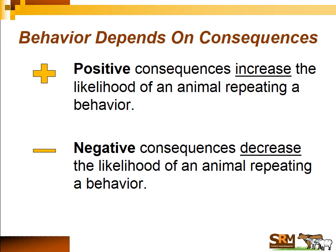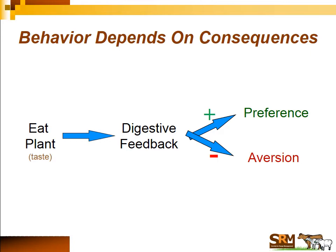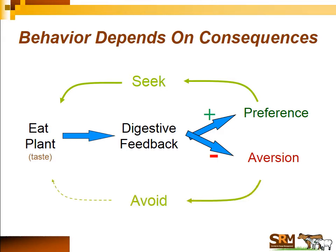We use this basic principle in training horses, dogs, and even members of our family. In terms of food: an animal eats food — that's the behavior — and it's followed by digestive consequences or feedback. If that feedback is positive in the form of nutrients and energy, the animal forms a preference for the food. If the feedback is negative, especially if the animal feels nauseous, it forms an aversion. If a preference is formed, the animal seeks that food out again; if negative, it avoids the plant in the future.